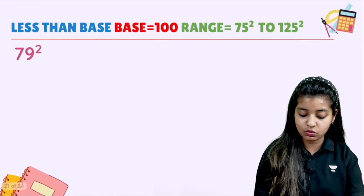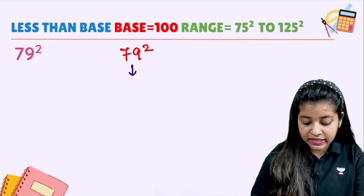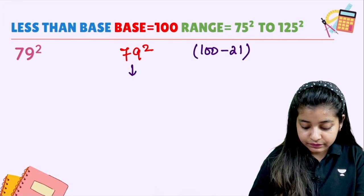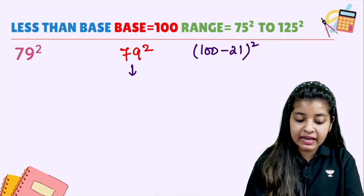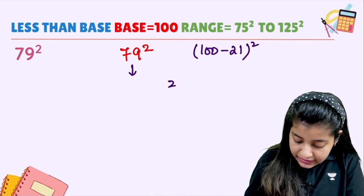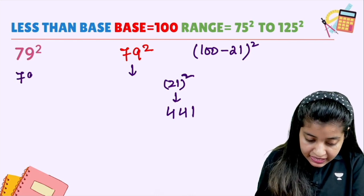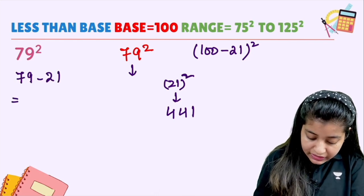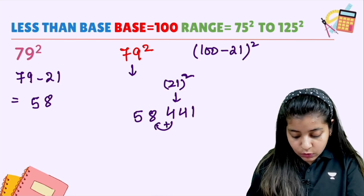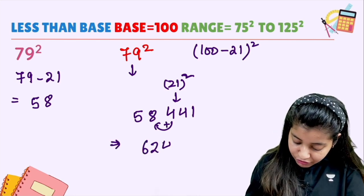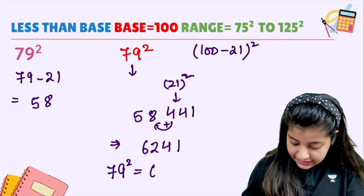79 squared — how will we calculate this? It becomes 100 minus 21. 21 squared is 441. 79 minus 21 gives 58. Carry 4 forward — 58 plus 4 gives 62, and 41 stays. So 79 squared is equal to 6241.